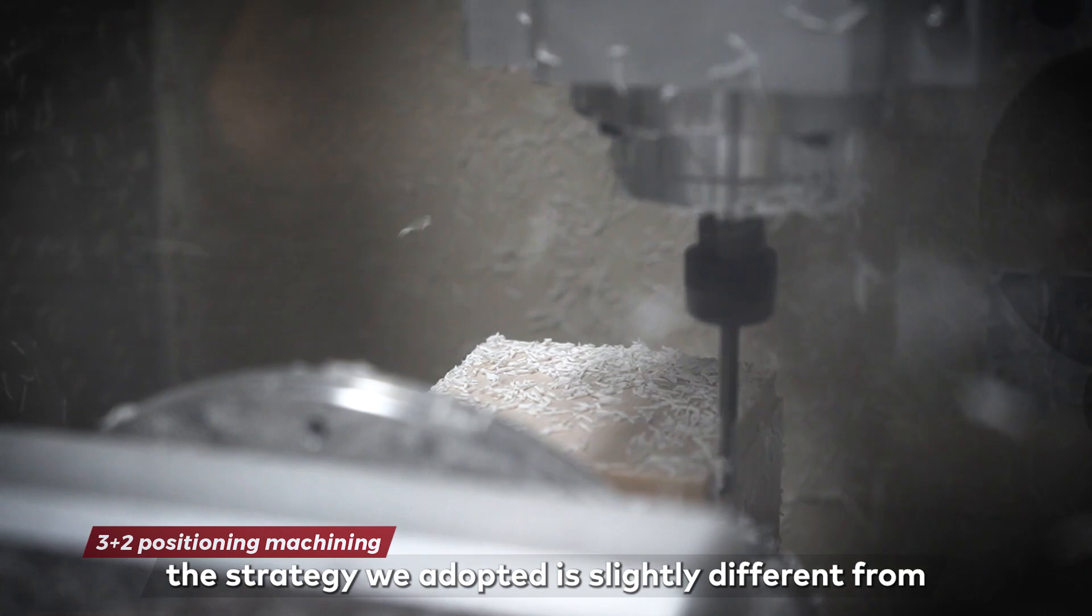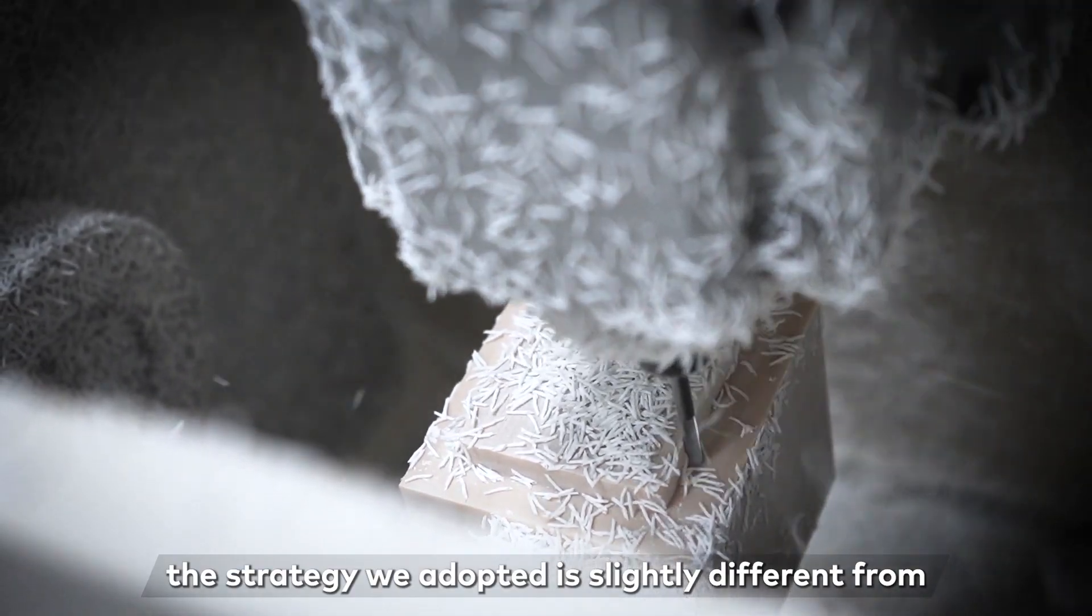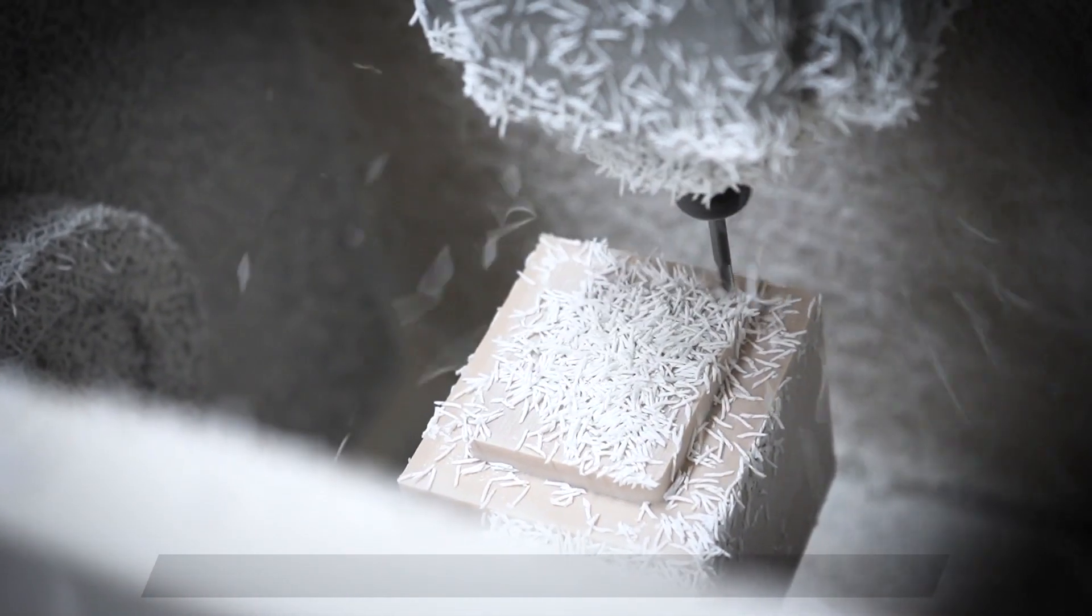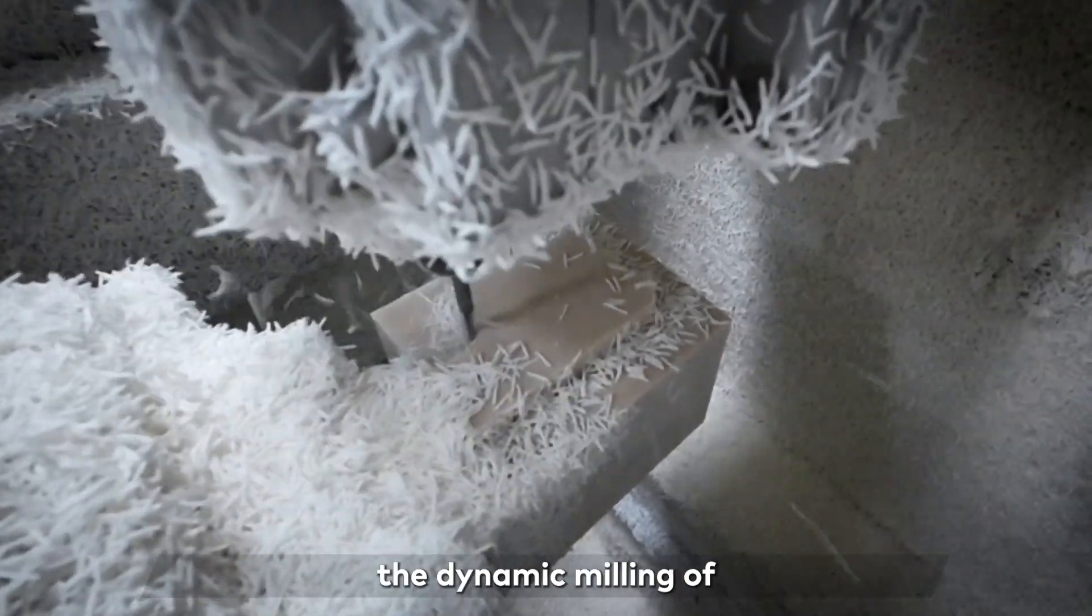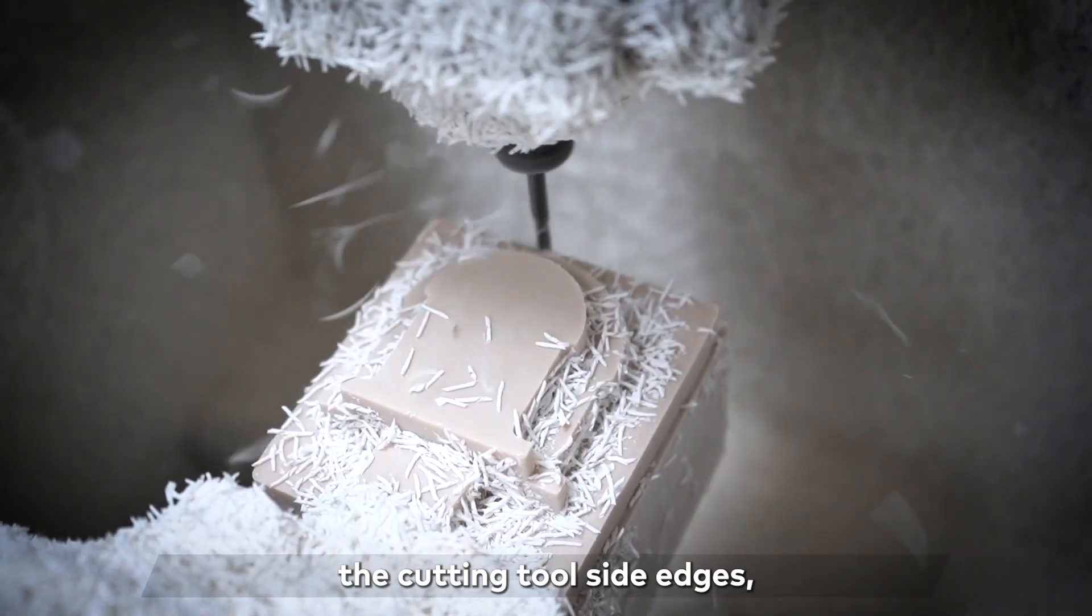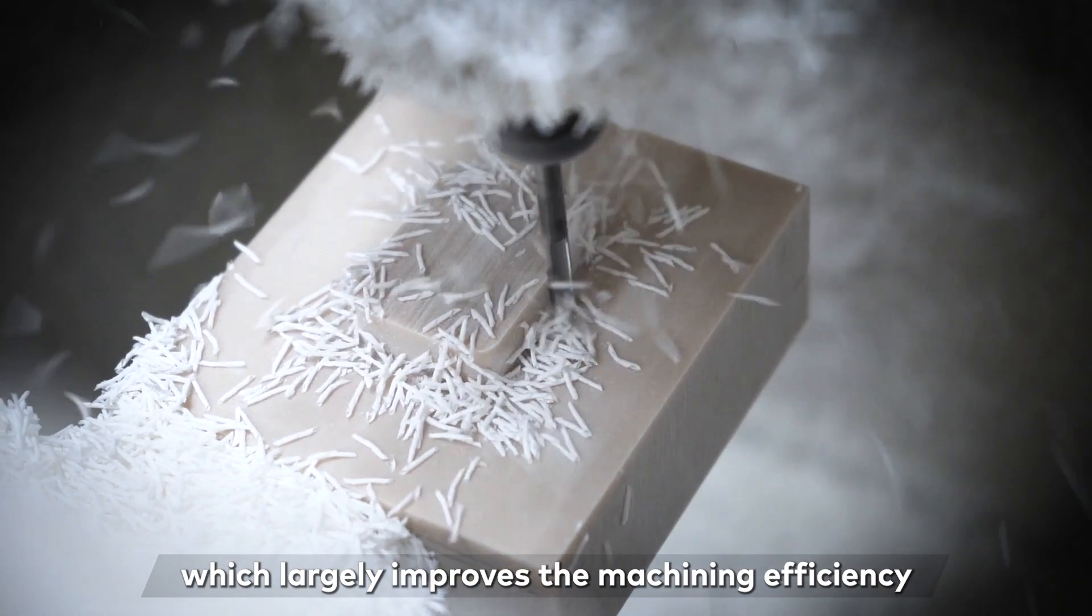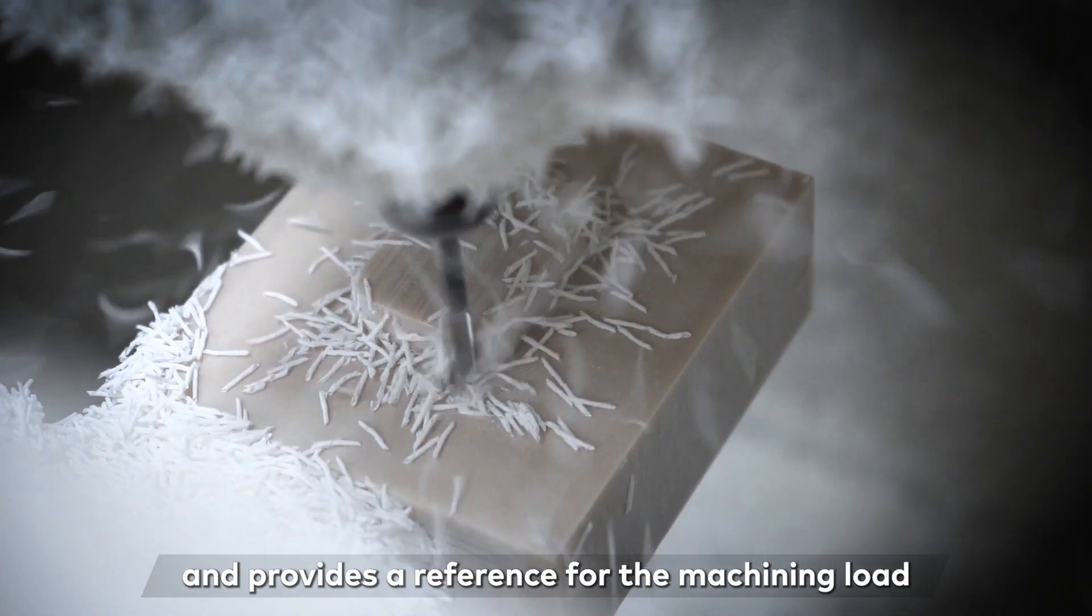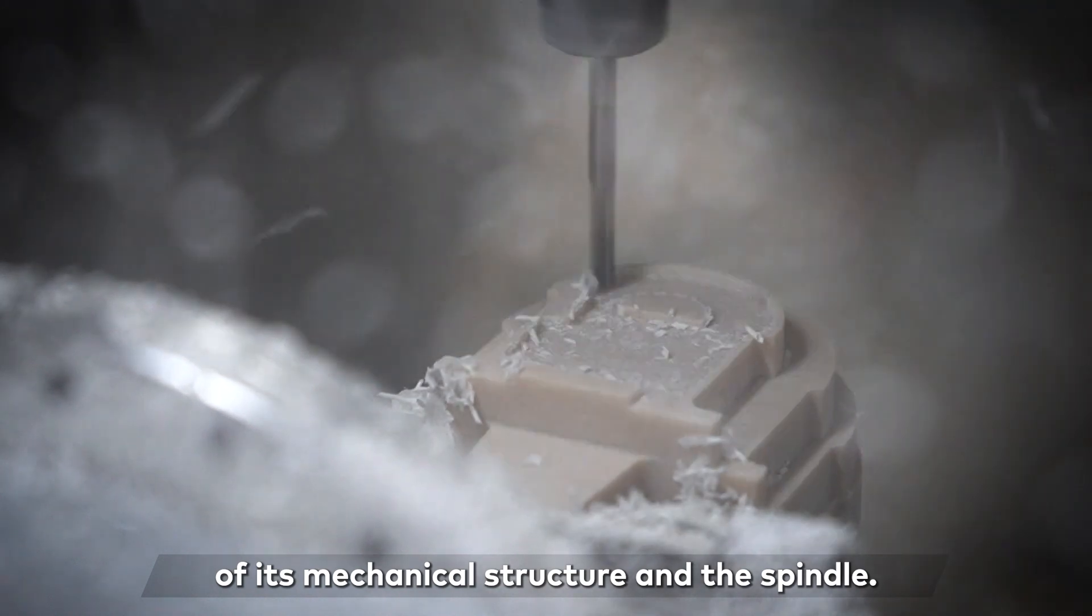During the roughing, the strategy we adopted is slightly different from how we used to do it. We made full use of the dynamic milling of the cutting two side edges, which largely improves the machining efficiency and provides a reference for the machining load of its mechanical structure and the spindle.